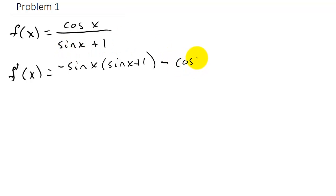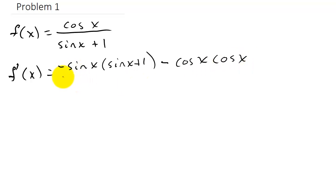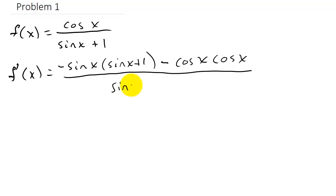The derivative of sine x is cosine x, and the derivative of 1 is just 0. So the derivative of the denominator is cosine x, and that's times the numerator, cosine x. All of that is over the denominator squared.